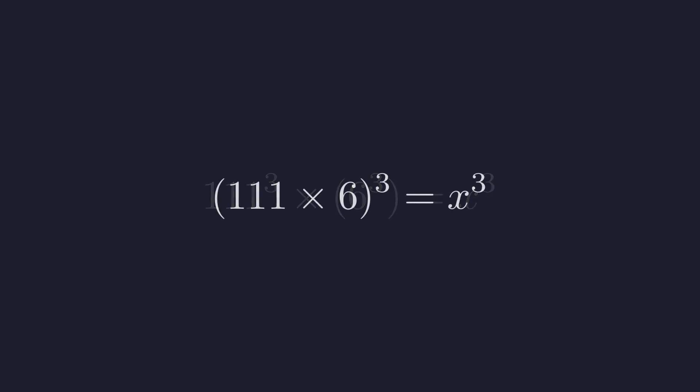Now I can use our power rule in reverse. Since we have a cubed times b cubed, that's the same as a times b, all cubed. So this becomes 111 times 6, all cubed equals x cubed. And 111 times 6 is 666. So we have 666 cubed equals x cubed. Which means x must be 666. Just like that, we've solved what seemed like an impossibly complex calculation without ever having to compute those massive cubes directly.